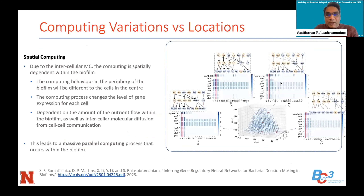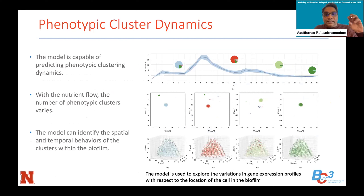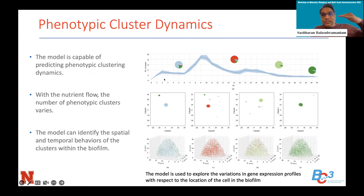This relates to spatial computing: depending on where cells are and the molecules they produce while communicating, because of the memory effect, the computation will be different for different cells. It's like a massive parallel computing system where all cells are computing in parallel with different relationships to each other. We can also see different phenotypic clustering dynamics that change over time based on different amounts of nutrients flowing in and communication between cells, modifying all the different computing behavior.